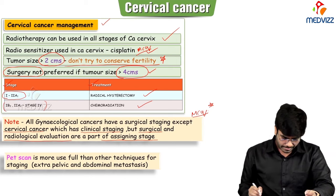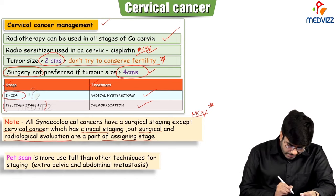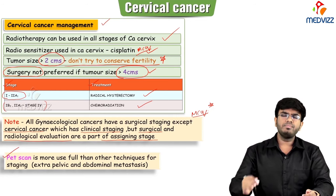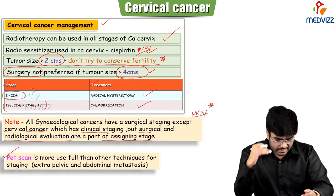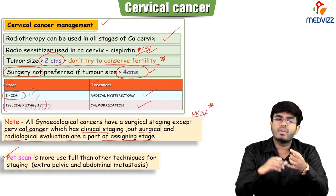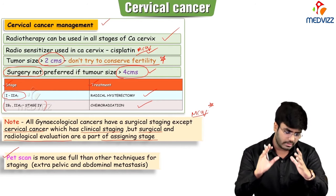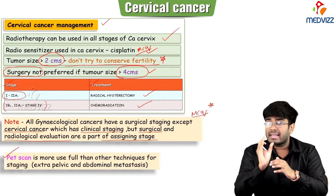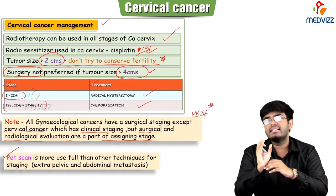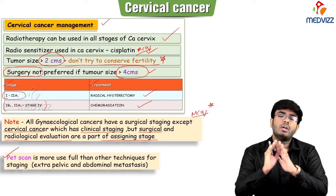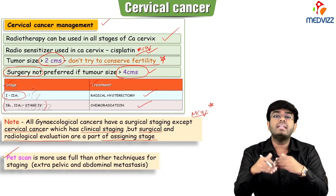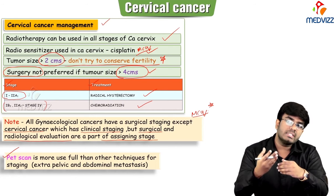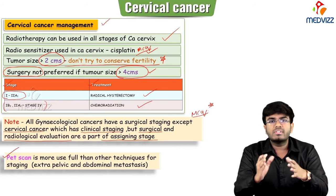Along with clinical staging, radiological and surgical evaluation must also be considered to assign the stage of cervical cancer. Out of all radiological evaluations, PET scan is most useful. Key rules: radiotherapy for all stages, radiosensitizer is cisplatin, cancer size greater than 2 cm — no fertility conservation, greater than 4 cm — no surgery.